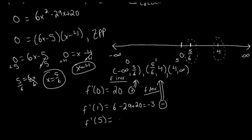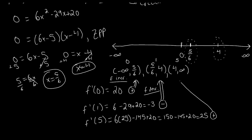For f prime of 5: 6 times 25 is 150, minus 29 times 5 is 145, plus 20. That gives us 150 minus 145 plus 20, which is 5 plus 20, or 25. That's positive, so on the interval 4 to infinity, f is increasing. So: negative infinity to 5/6 and 4 to infinity are where f is increasing, and 5/6 to 4 is where f is decreasing. We've answered the third question.